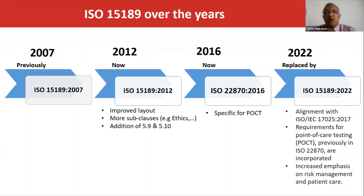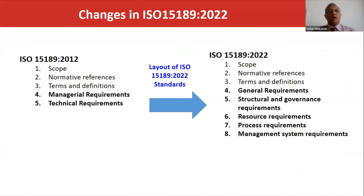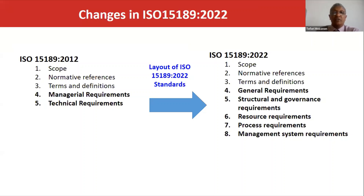What did the fourth edition bring as the main change from the third edition? It has alignment in line with ISO/IEC 17025 of the 2017 version, it accommodates requirements for point-of-care technology, and it also places increased emphasis on risk management and patient care. The fourth edition now has eight sections, while the third had five sections. The structural and governance requirement is also one groundbreaking addition to this standard.